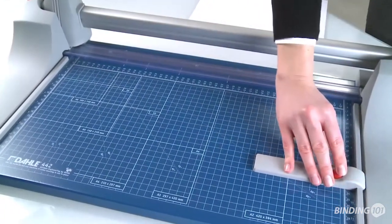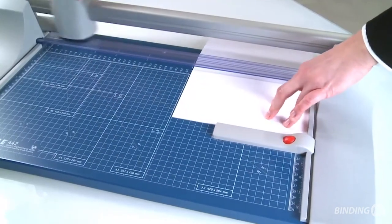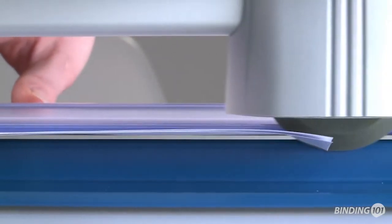The adjustable backstop makes the cutting stock easy to align. Automatic clamping reliably holds the cutting stock in place.